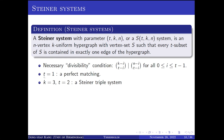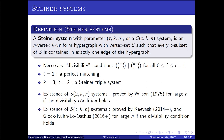For small parameters: when t equals one, the corresponding Steiner system is a perfect matching; when k equals three and t equals two, the corresponding Steiner system is a Steiner triple system. For general parameters, the existence of Steiner systems is non-trivial. When t equals two, the existence of S(2,k,n) was proved by Wilson for sufficiently large N if the divisibility condition holds. For general parameters, it was proved by Keevash and by Glock-Kühn-Lo-Osthus for large N if the divisibility condition holds.